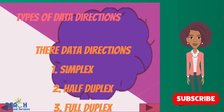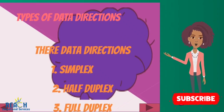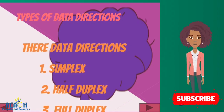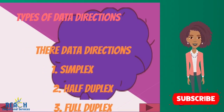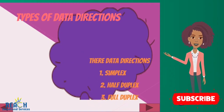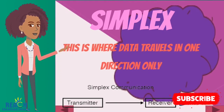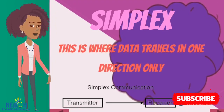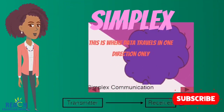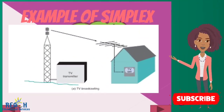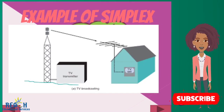The first is simplex. Simplex is data traveling in one direction only. Think about a one-way street where the car can only go up the road — that's how simplex works. An example of simplex communication is when you're watching television and you can only hear and see but not respond.